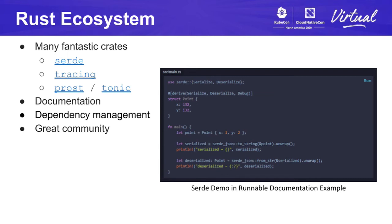Rust has also made great documentation a major focus. It has first-class language support for doc strings, and RustDoc, which ships with Rust, can be used to generate great documentation pages including runnable examples. Rust also has strong support for dependency management through its package manager, Cargo. When working with Krustlet, we are balancing a number of rapidly evolving dependencies, changing Kubernetes API versions, and complex combinations of libraries and standalone binaries in a single project. Cargo makes it a breeze to manage all of this and is a very well-thought-out tool.